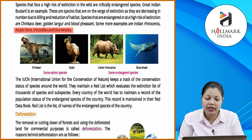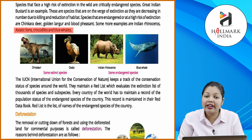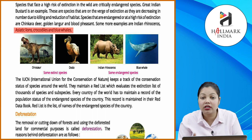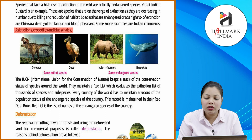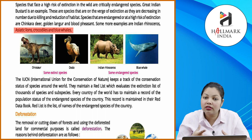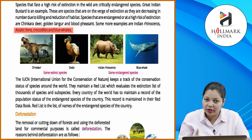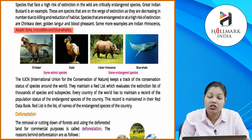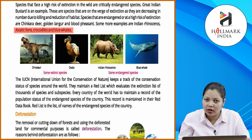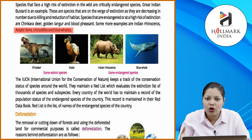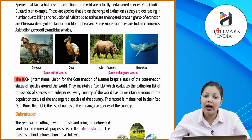Species that are endangered or at a high risk of extinction include chinkara deer, golden langur, and blood pheasant. Other examples are the Indian rhinoceros, Asiatic lion, crocodiles, and blue whales. These species are decreasing in number due to killing and reduction of habitat, so we must work to prevent their extinction.